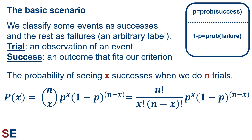The binomial equation calculates the probability of seeing x successes when we do n trials. The probability of observing x successes is n choose x, times the probability of success raised to the x power, times the probability of failure — given by 1 minus p — raised to the n minus x power.